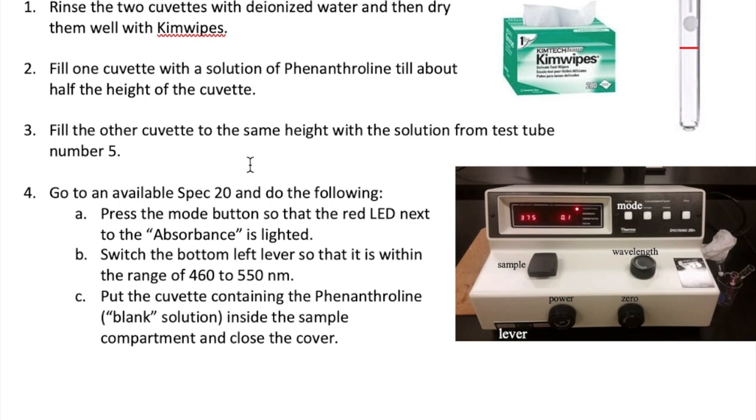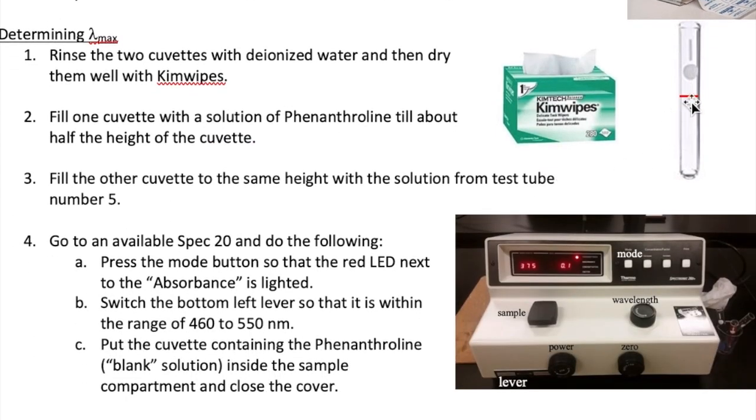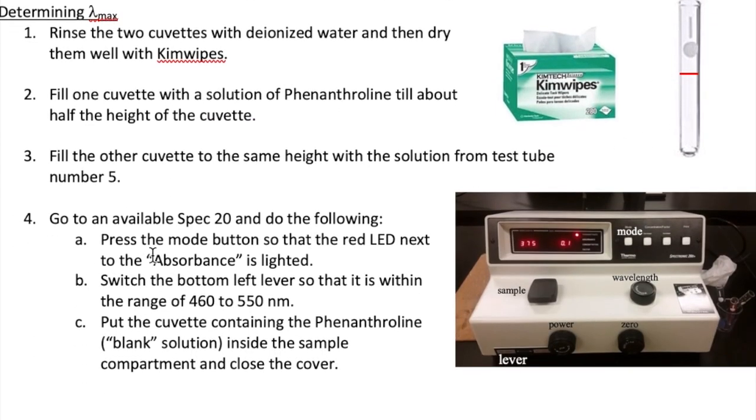To one of the cuvettes, add Phenanthroline until it's about halfway full, corresponding to the red mark shown here. To the other cuvette, add the solution from test tube number 5, which you made earlier, also until the cuvette is about halfway full. Take these two cuvettes to an available Spec 20. You will now perform a scan to find your lambda max.